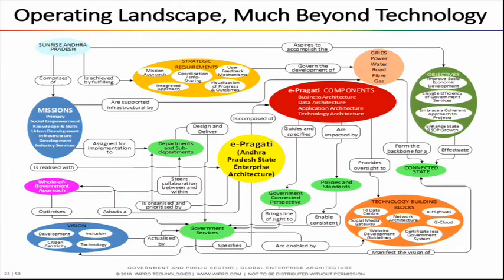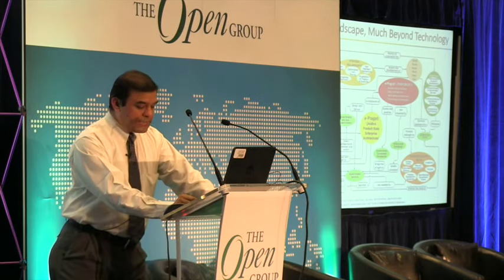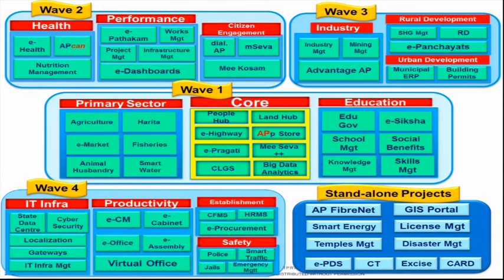ePragati is much beyond technology. Looking at missions and whole-of-government approach, we have grids: power, water, road, fiber, and gas — it is not just IT. The state wants to use enterprise architecture as a means to achieve digital government. We have identified 72 initiatives prioritized by waves: Wave 1, 2, 3, 4, and a few standalone projects. Wave 1 contains foundational initiatives that need to be done first for other things to work. Of the 72 projects, about 44 are new initiatives and about 27 are existing initiatives being enhanced — a mix.